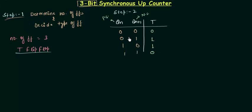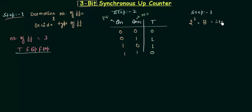This is the excitation table for the T flip-flop and step number two is now over. In step number three we have to find the state diagram and the circuit excitation table. For a 3-bit synchronous counter, the number of states is 2 to the power 3, which is 8. The maximum count is 8 minus 1, which is 7.